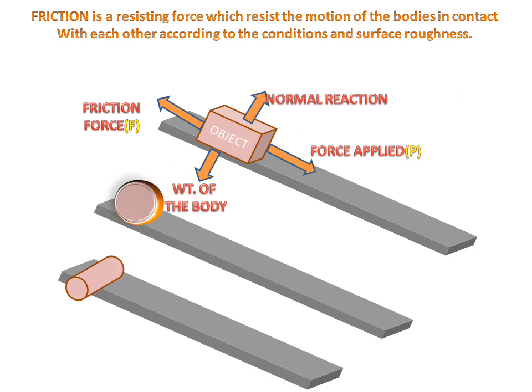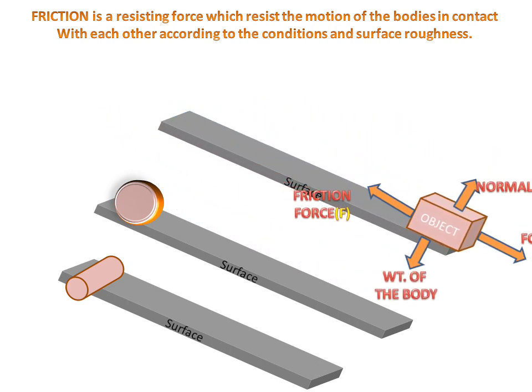Now the movement of the object we can see, this object can move like this and circular object will move like this and a cylindrical object will move like this.